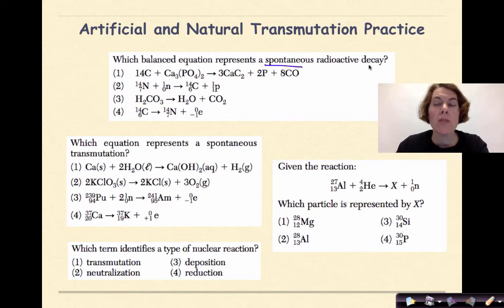Welcome back, let's see how you did. Which balanced equation represents a spontaneous radioactive decay? The keyword here is decay. We know that one and three are going to be out because those are chemical reactions, which leaves us with two and four which look most like nuclear reactions. Two though is artificial transmutation because we have a target nucleus and a particle. The answer here would be four because we have carbon-14 undergoing spontaneous decay forming nitrogen-14 and releasing a beta particle.